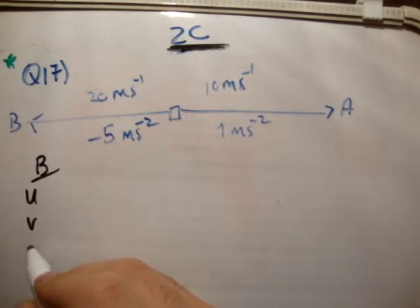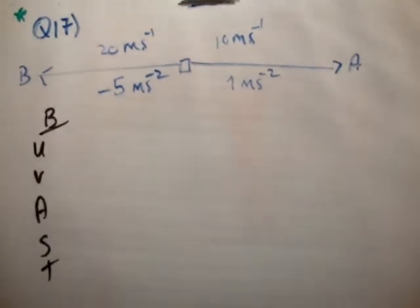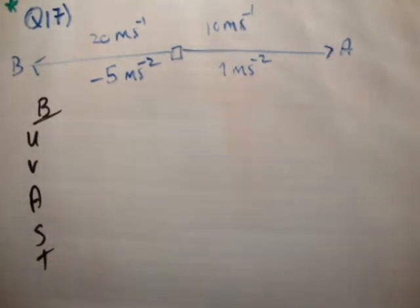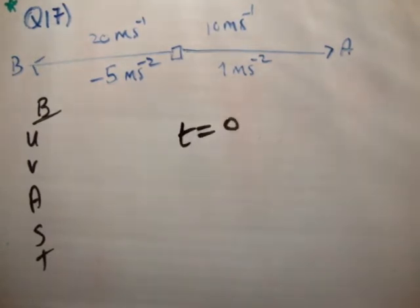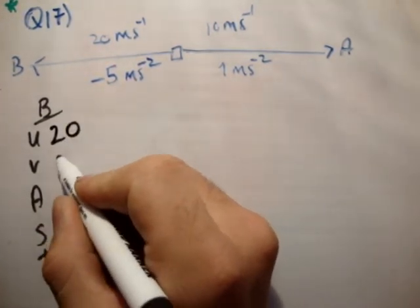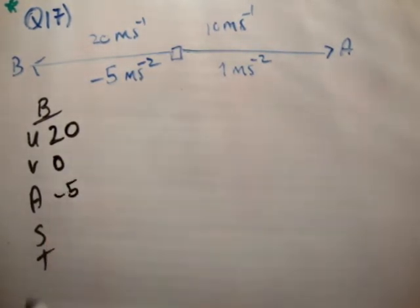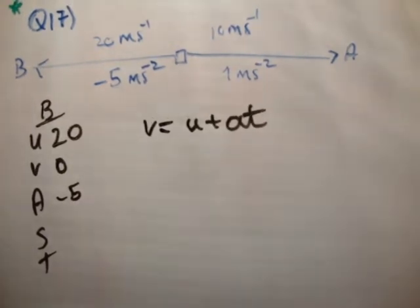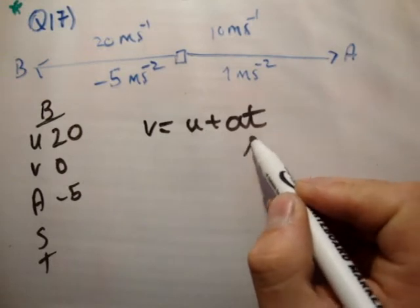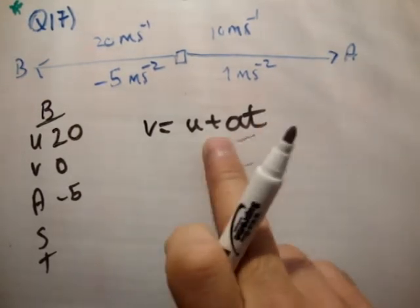So, for car B, we'll use the usual UVAST formulae. He starts, now, when they say it passes a traffic light, don't read into what's physically happening. Just look, that basically means that the starting point is the traffic light, and we're going to call that, at the traffic light, T is equal to 0. So, we'll say his initial speed, at T is equal to 0, at the traffic light, is 20. He goes to rest, we're told, at a deceleration of minus 5. So, let's find out the rest of the variables. If we look at V is equal to U plus AT, the only unknown is T. So, that's one equation, one unknown. We're good to go.